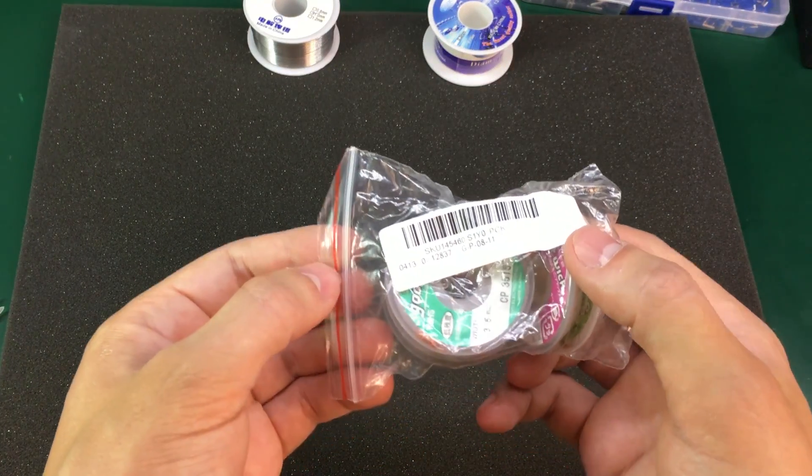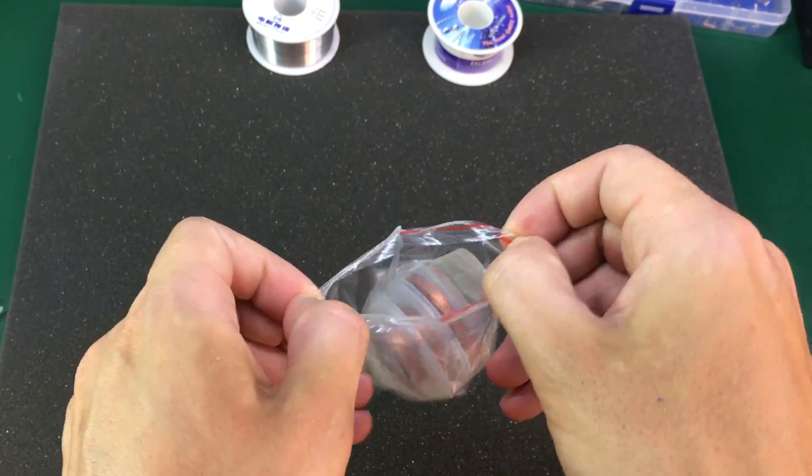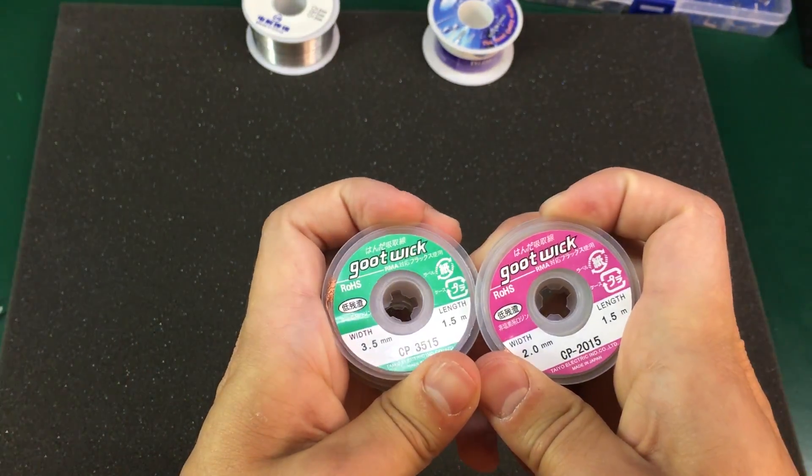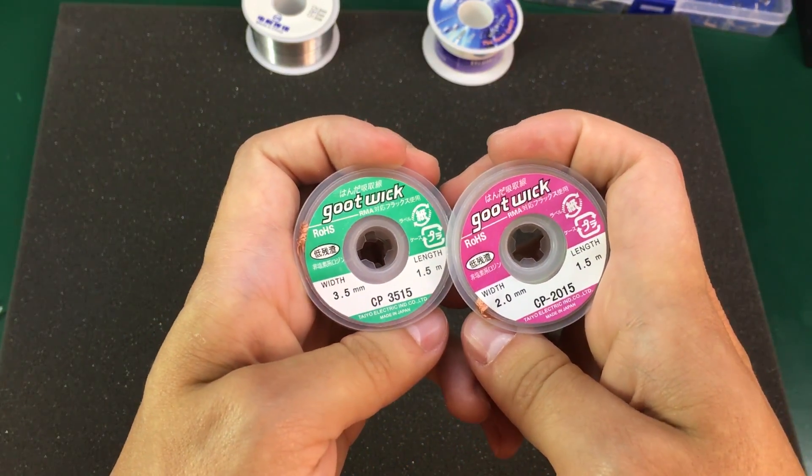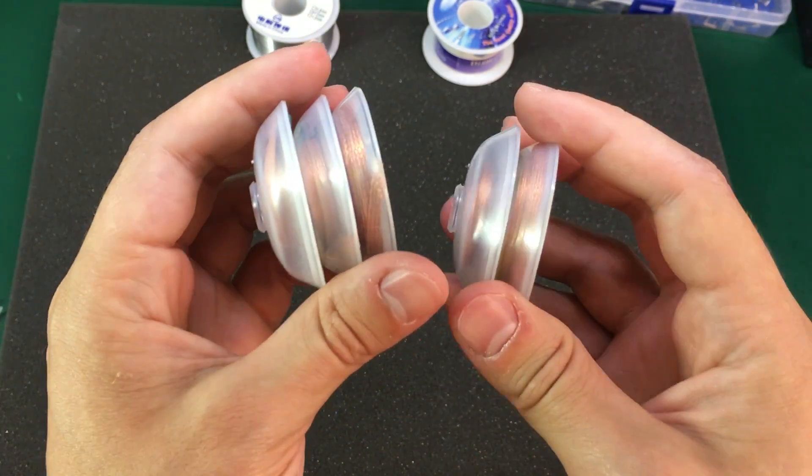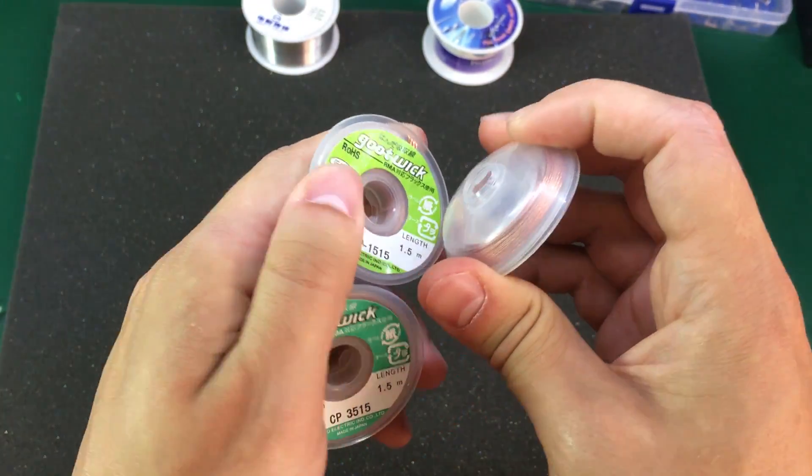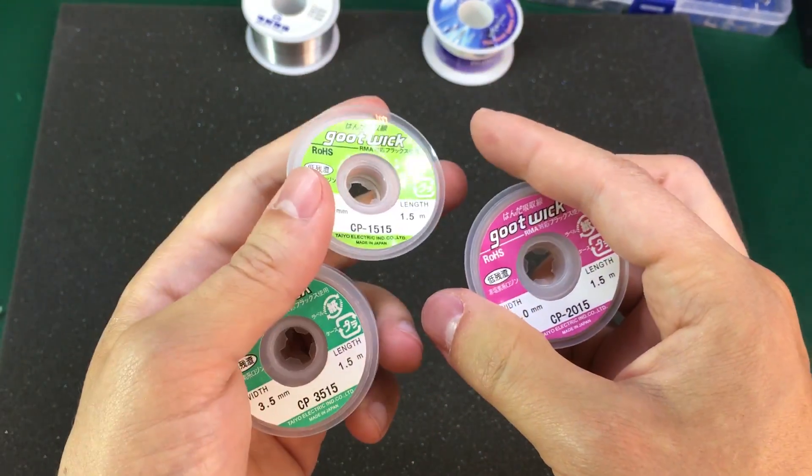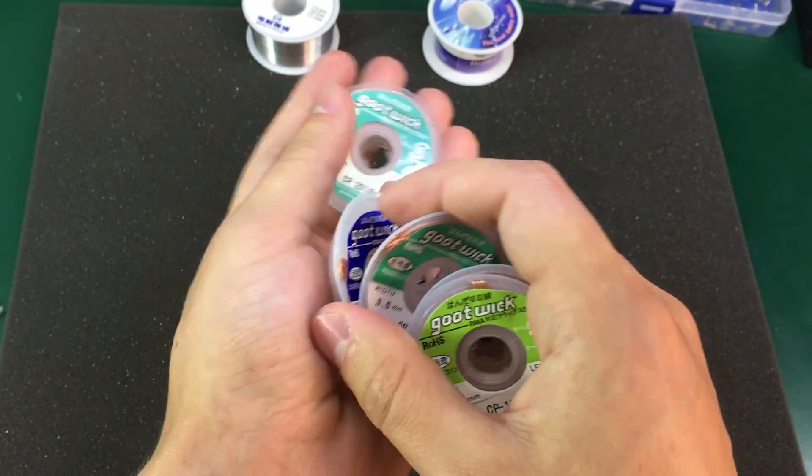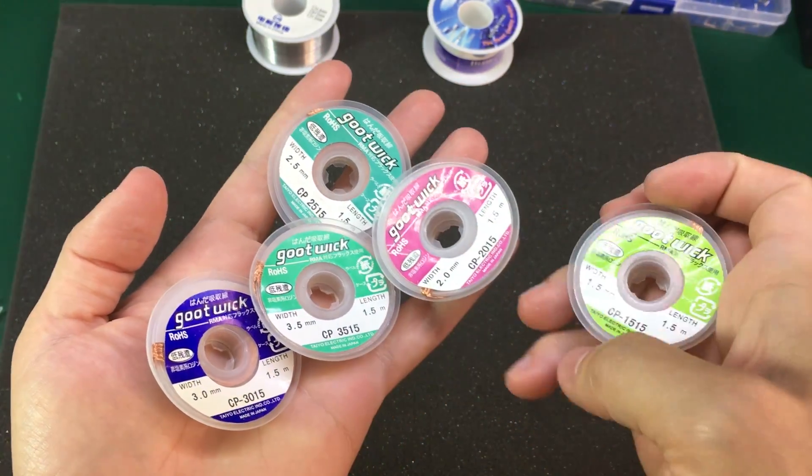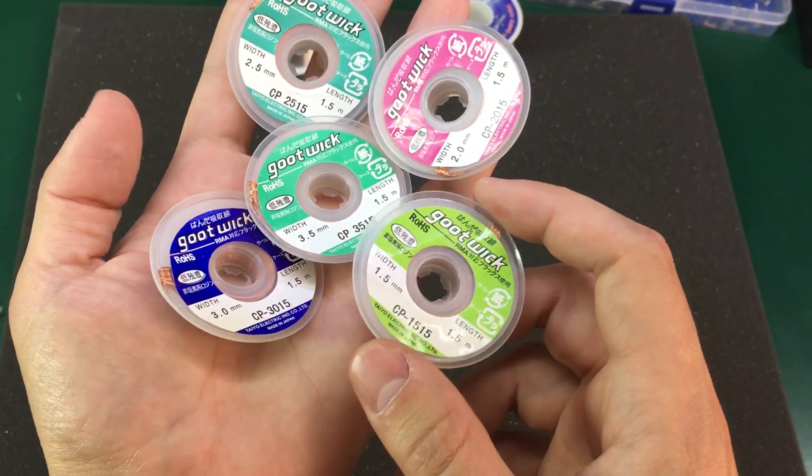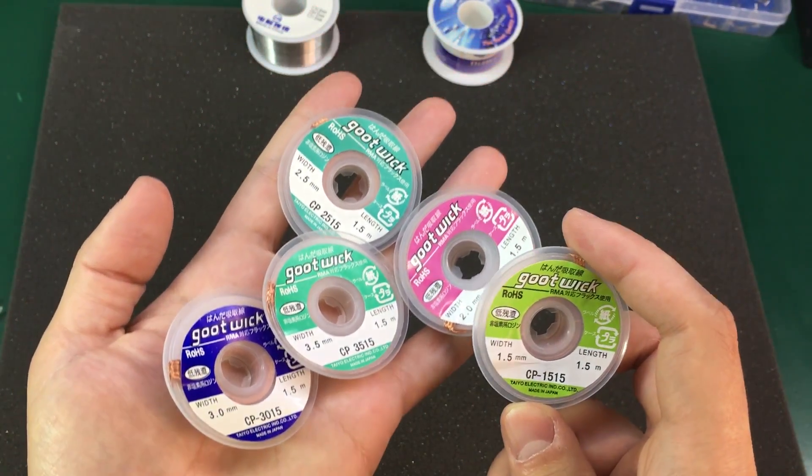I also got myself some desoldering wicks and let's check them out. Although these ones are branded good wicks I kind of doubt they're genuine because well I got them from Banggood but it will still do the job even if it's fake. I got myself 5 different sizes and these should last me for years as I don't do that much desoldering and repair work. I paid about 5 dollars for these 5 pieces and they came with free shipping.